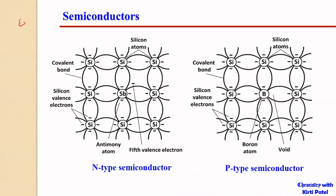When we go for extrinsic semiconductors, they are doped with either pentavalent or trivalent impurities. A pentavalent impurity like antimony, phosphorus, or arsenic — if a very small amount is added, four of the five electrons of the impurity atom form covalent bonds with the surrounding silicon atoms.